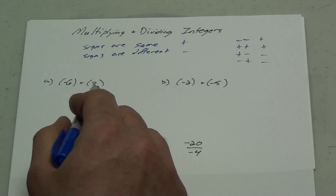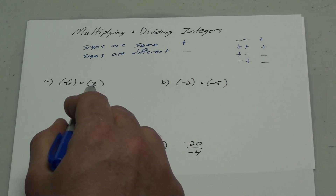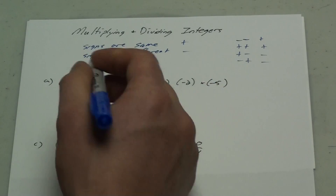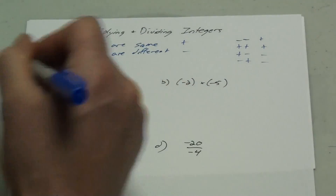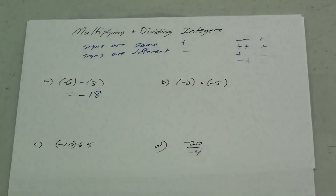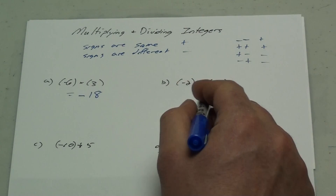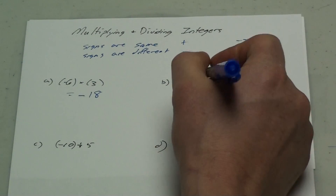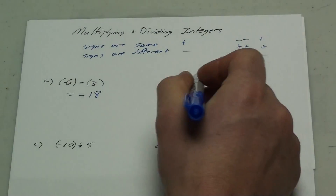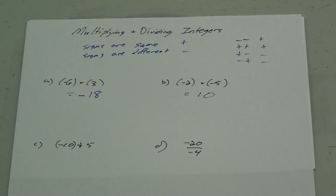So negative 6 times 3. Signs are different — negative 6, positive 3 — multiplying. So my answer is gonna be a negative, and it's gonna be negative 18 for 6 times 3. Negative 2 times negative 5. Both are negatives; the signs are the same, so my answer is gonna be a positive. And 2 times 5 is 10, so my answer is positive 10.